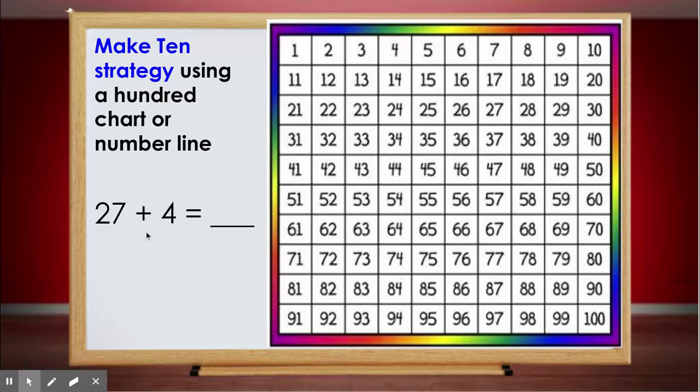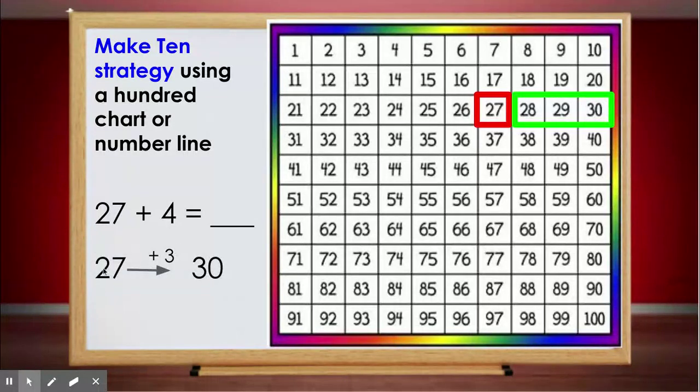Now let's use the number chart again, but this time we're going to use the make 10 strategy. We're still going to use 27 plus 4. Again, I'm going to start from the big number 27, it's right here. Now for the make 10 strategy, the idea is for you to figure out how many more you need to get to the next 10. In this chart, all the 10s are on our last row. So I want to see how many more I need to get to the next 10, and from the green rectangle I notice there are three more spaces needed to get to the number 30.